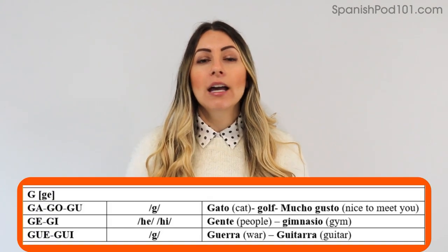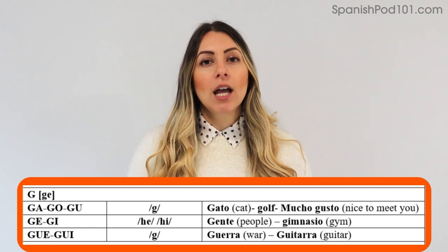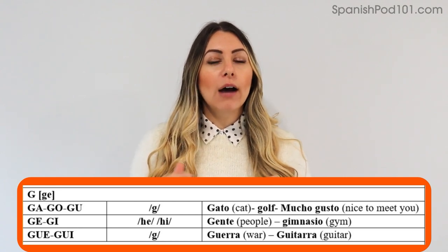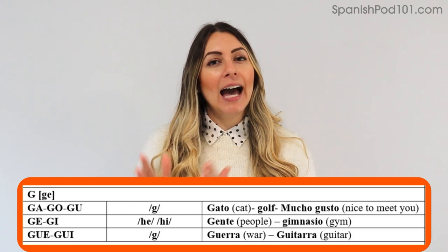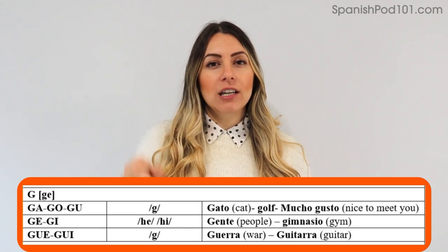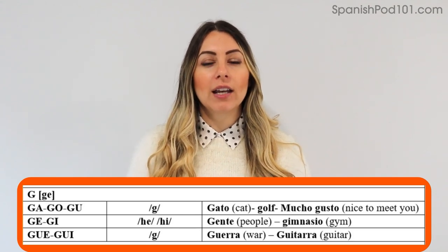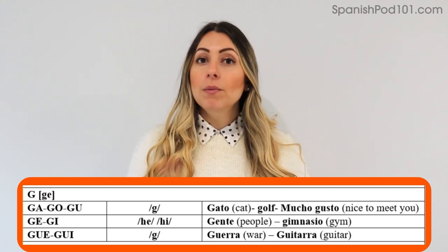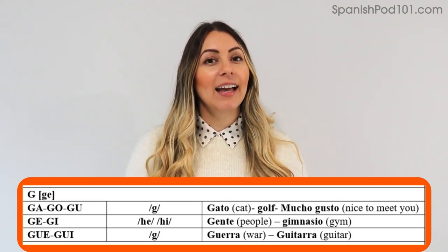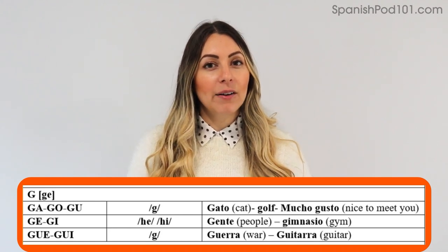Another difference is G-U-E and G-U-I — exactly like Q-U-E and Q-U-I, we don't pronounce the U in between. The U is placed there so we know to pronounce it with the hard G sound, not the soft H sound.